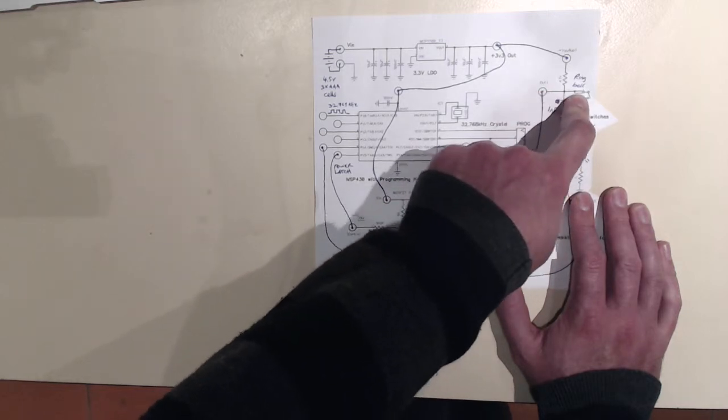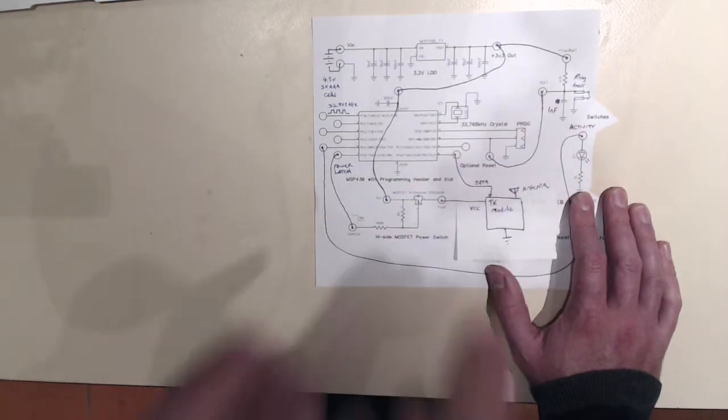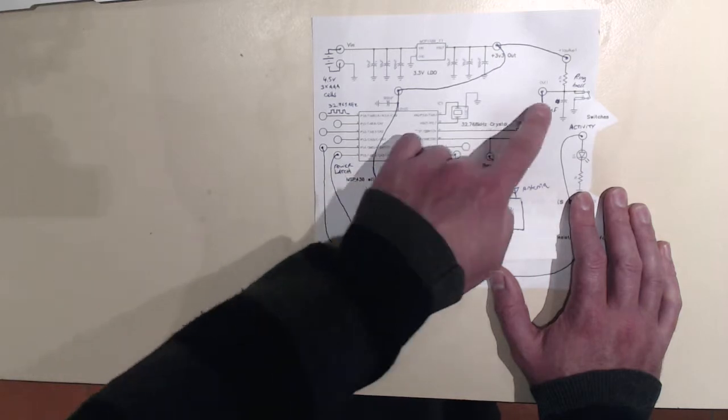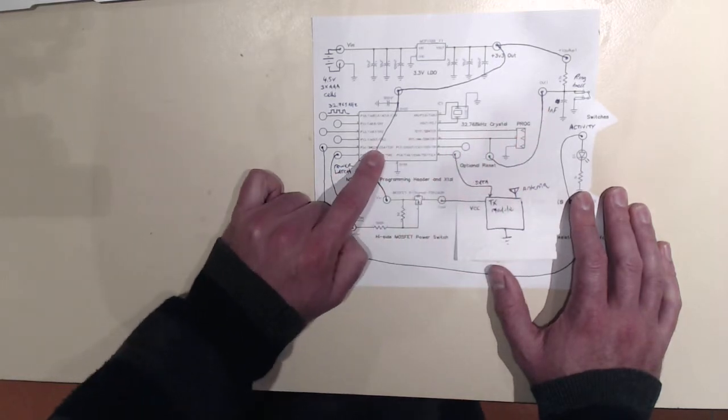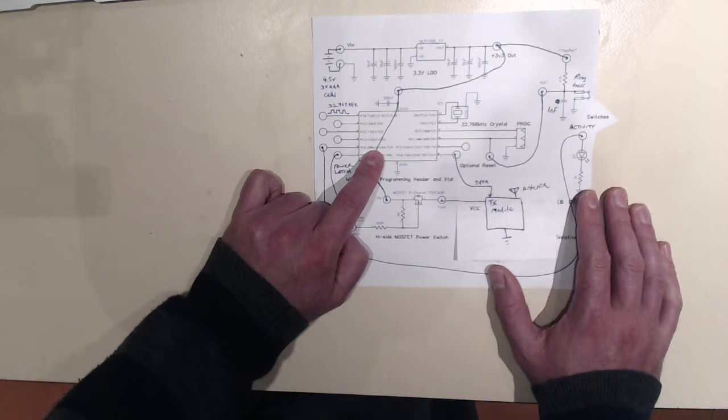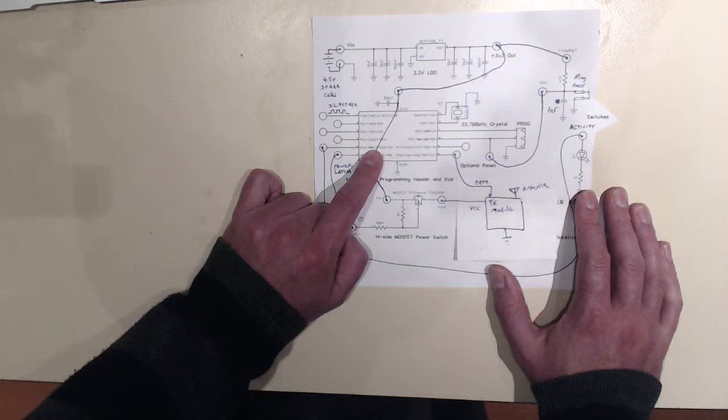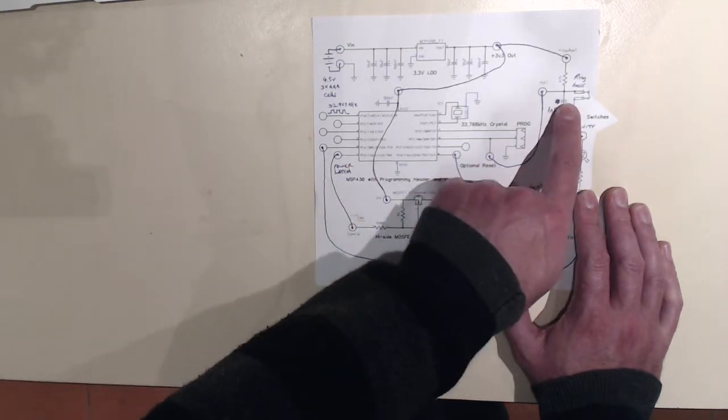The reset button hooks to the reset line of the microcontroller. So whenever you press that button, which just happens to be the button that you use to ding the doorbell, it resets the microcontroller. The microcontroller just cycles through a little bit of code. When that code has finished, the microcontroller goes to sleep. And that's really it until it's reset again.